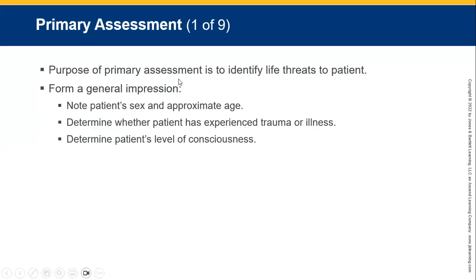The premise of a primary assessment is to identify life threats to the patient. Form a general impression — note the patient's sex and age, and determine whether the patient has experienced any trauma or illness. Determine the patient's level of responsiveness or consciousness. Is the patient breathing? Is the patient communicating with you?